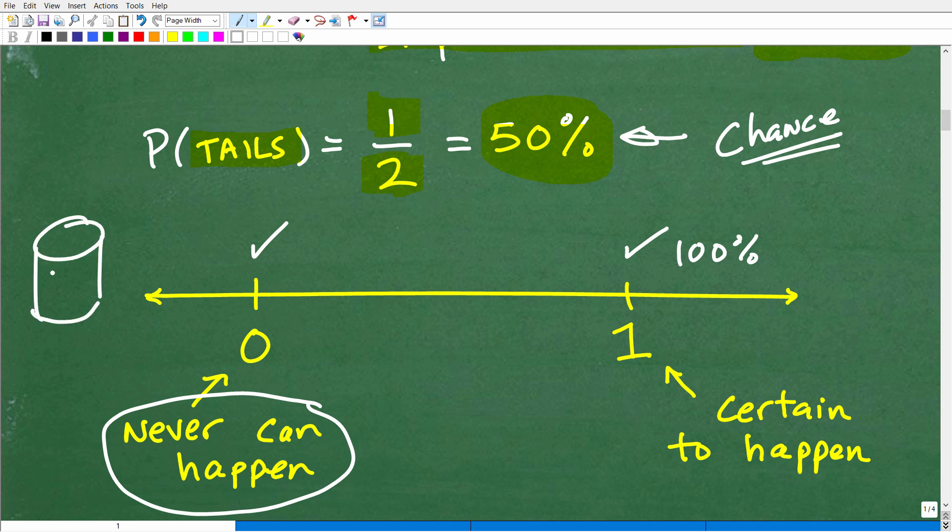Let's say I had a jar, and I had red and green marbles in that jar. And I said, what's the probability of pulling a blue marble out of that jar? Well, there's no blue marbles in there. So, there's zero blue marbles. There's no way that can happen. So, there's a 0% chance of you ever pulling a blue marble out of that jar.